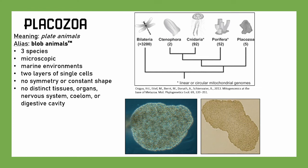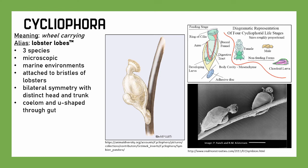We're going to keep going to even more obscure and small phyla. We have Cycliophora, which means 'wheel carrying.' They don't have a common name, but I'll call them lobster lobes. They're microscopic, found in marine environments. They are incredibly specific — even more so than those cephalopod kidney parasites — because these are attached to the bristles of lobsters. They have different life stages, bilateral symmetry, a U-shaped gut, distinct head and trunk, and a through-gut with an anus. Scanning electron microscope images show them on lobster bristles.